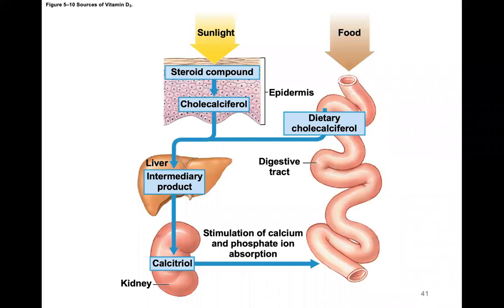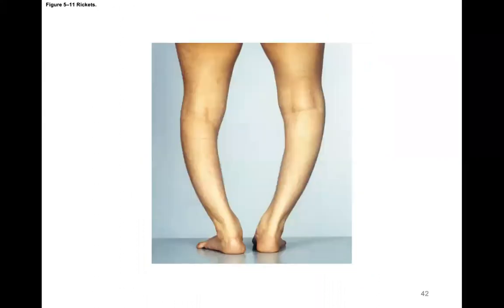This diagram shows the connection between vitamin D production and calcium absorption from food and vitamins. Bowed legs are very common with rickets. This is not commonly seen in the United States due to adequate nutrition, but remains possible in many developing countries.